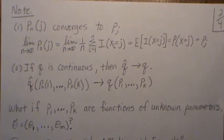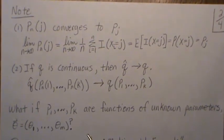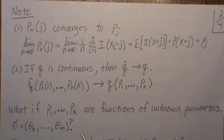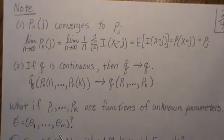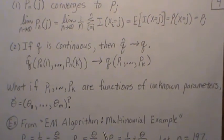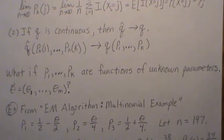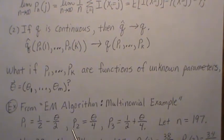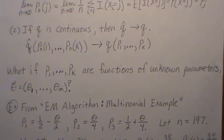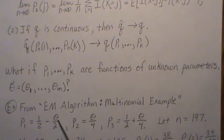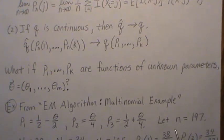What if the p's are functions of unknown parameters? So there are k categories and p1 through pk are the probabilities of each category, but those probabilities rely on some other parameter — possibly a vector. In this example, referenced from my EM algorithm multinomial video, there are three categories with probabilities that depend on theta. We want to estimate theta, and once we have an estimate for it, we can estimate the cell probabilities.